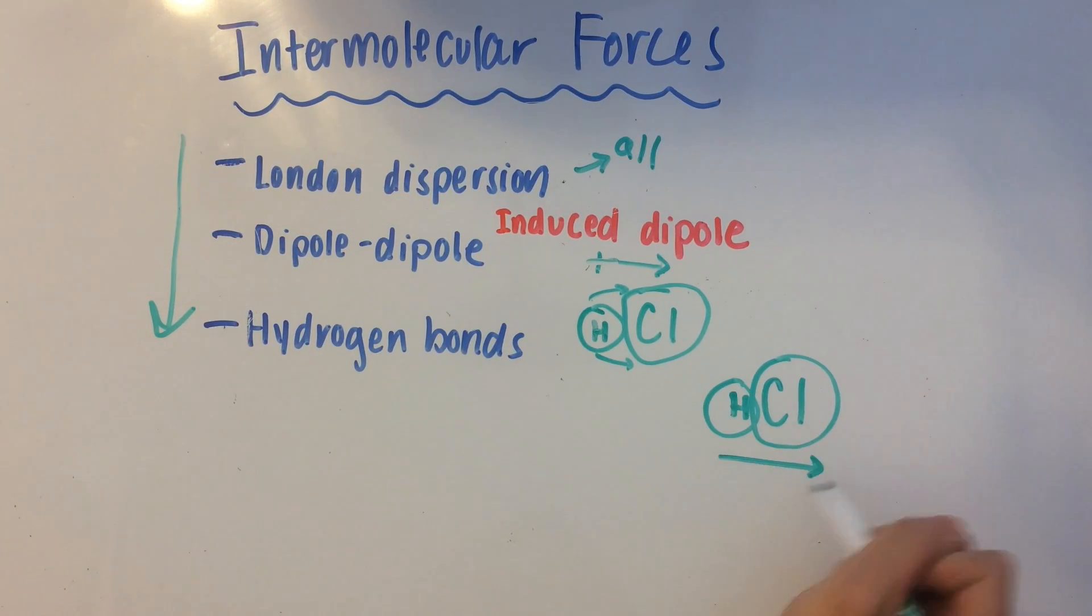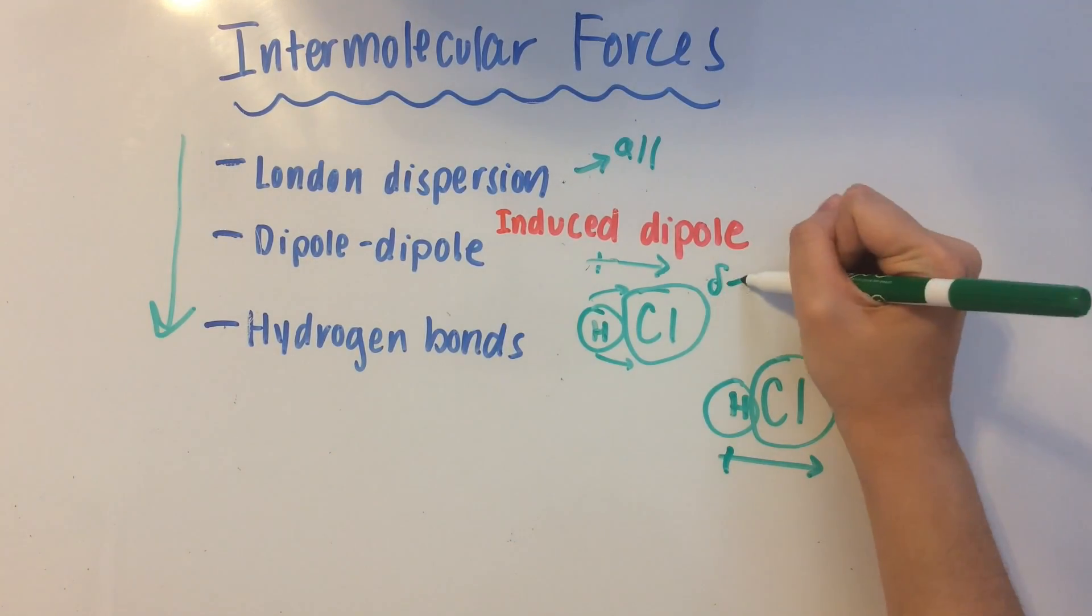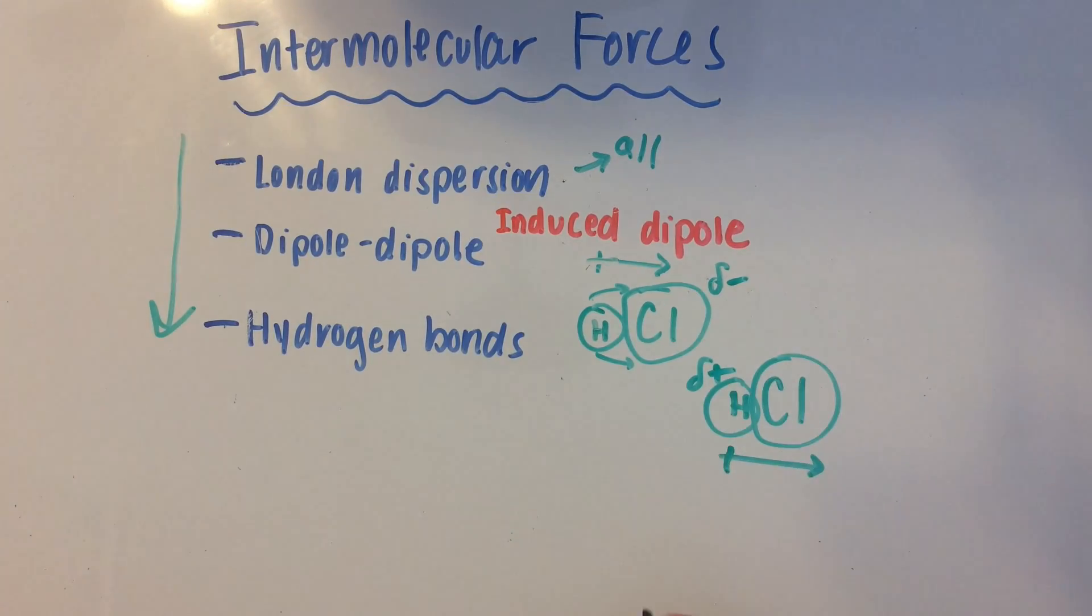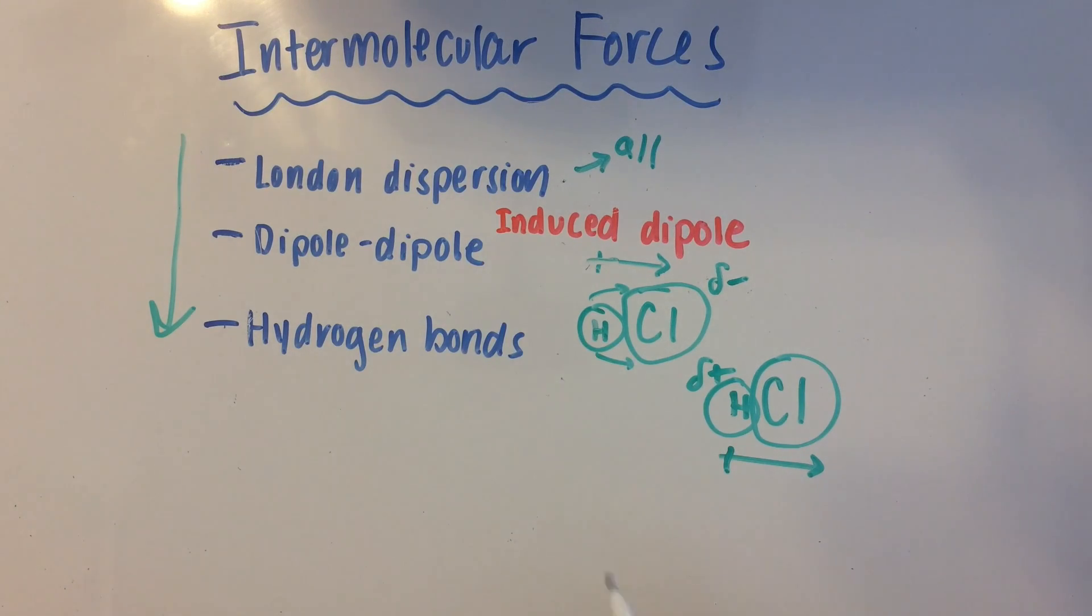We can do the same thing for this molecule. And so since chlorine has a partial negative charge, and hydrogen has a partial positive charge, these two will attract each other. There will be an electrostatic force in between them. And that's what we call dipole-dipole interactions.